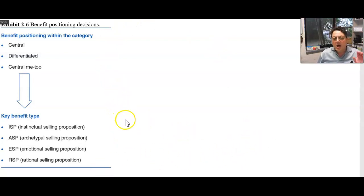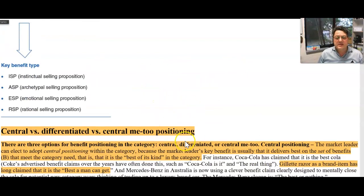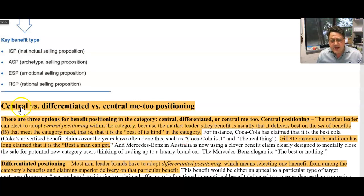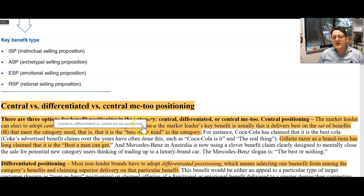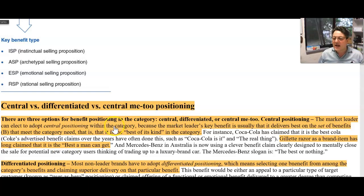I expect to see this in the appendices of your assignment and in your group marketing plans, because you can say: the ads in our situation audit have these elements. Central versus differentiated versus central me-too positioning — these are three options of benefit positioning. The market leader can adopt the central positioning.